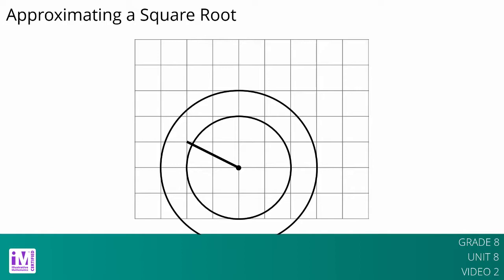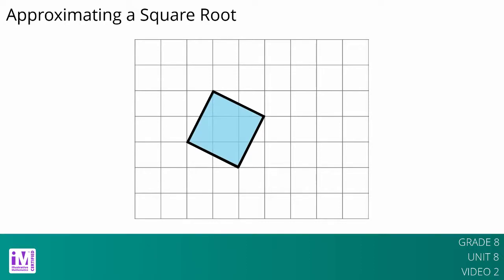To find an exact value for the length of the segment, we can build a square on it, using the segment as one of the sides of the square. The area of this square is 5 square units. That means the exact value of the length of its side is the square root of 5 units.